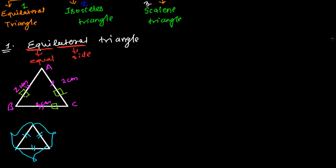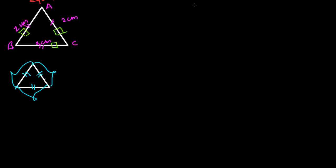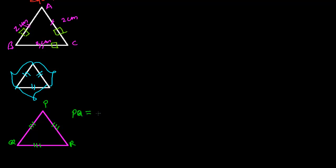Let me draw one more triangle PQR. If I give three cuts on each side — one, two, three — it means side PQ equals side PR equals side QR. That is the kind of symbol we generally use for equilateral triangles, indicating all three sides are equal in length.